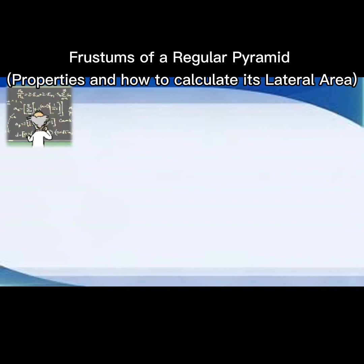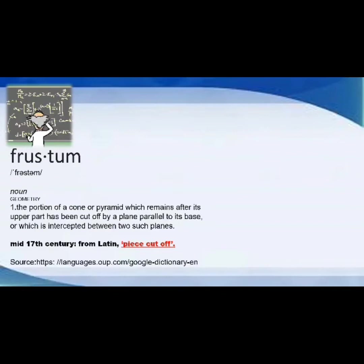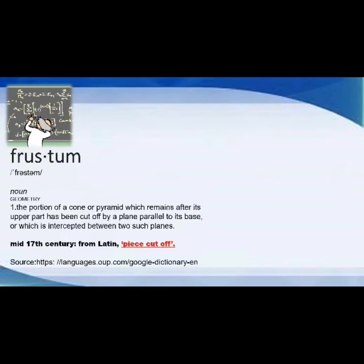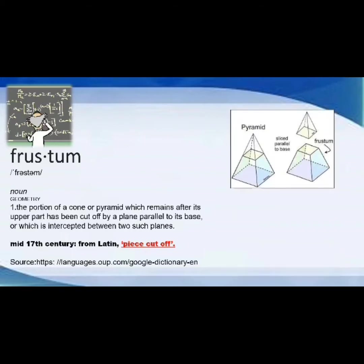First, the frustum: when we say frustum, it is the portion of a cone or pyramid which remains after its upper part has been cut off by a plane parallel to its base, or which is intercepted between two such planes. It is from a Latin word in the mid-17th century which means 'piece cut off.'